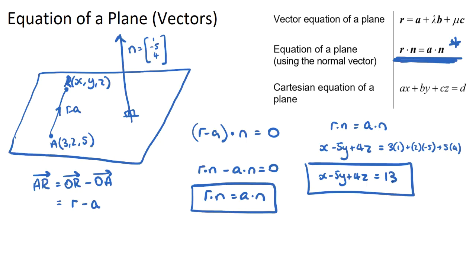So therefore x − 5y + 4z = 13, and that is the Cartesian equation of our plane. It's not as scary as you probably originally thought. In conclusion, to find the Cartesian equation of a plane we need a normal vector and a known point. The left-hand side is (x, y, z) dotted with the normal, and the right-hand side is the known point dotted with the normal.